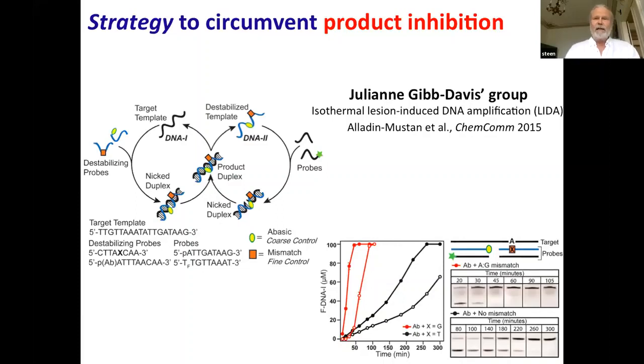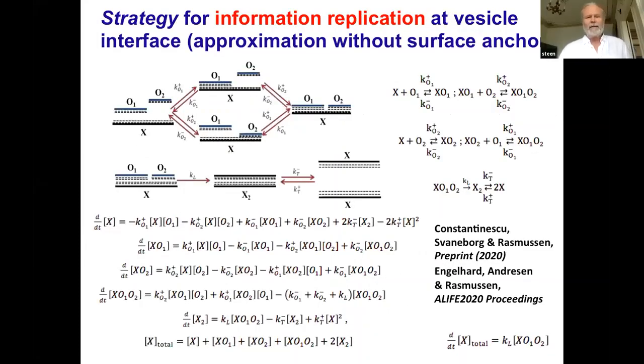But the big break, as far as I can tell, was when Juliana Gibbs-Davis group came up with a beautiful way to circumvent product inhibition. They said, guys, you've been looking at this wrong. What you need to do is to use mismatches and abasic sites. You simply have to make sure that the ligated DNA has an easy way of jumping off the template. And here's some of the results from 2015. She has a patent for this method and she can use that to as an alternative for PCR amplification of DNA. So LIDA, this is something you should remember.